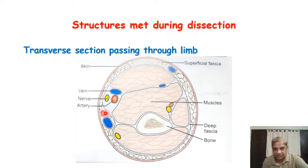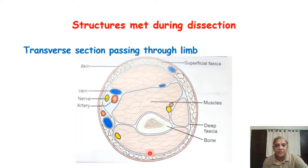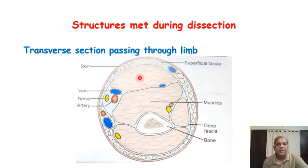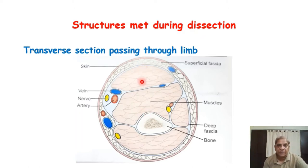In the superficial fascia there are veins, arteries, and minute cutaneous nerves supplying the skin. Deep to the superficial fascia, the third layer is made up of a thin membranous, inelastic structure covering tightly to the deeper structures — this is called the deep fascia. Deep fascia is a membrane made up mostly of collagen fibers, and it also sends partitions from its undersurface to divide muscle groups into various compartments so they can function independently.